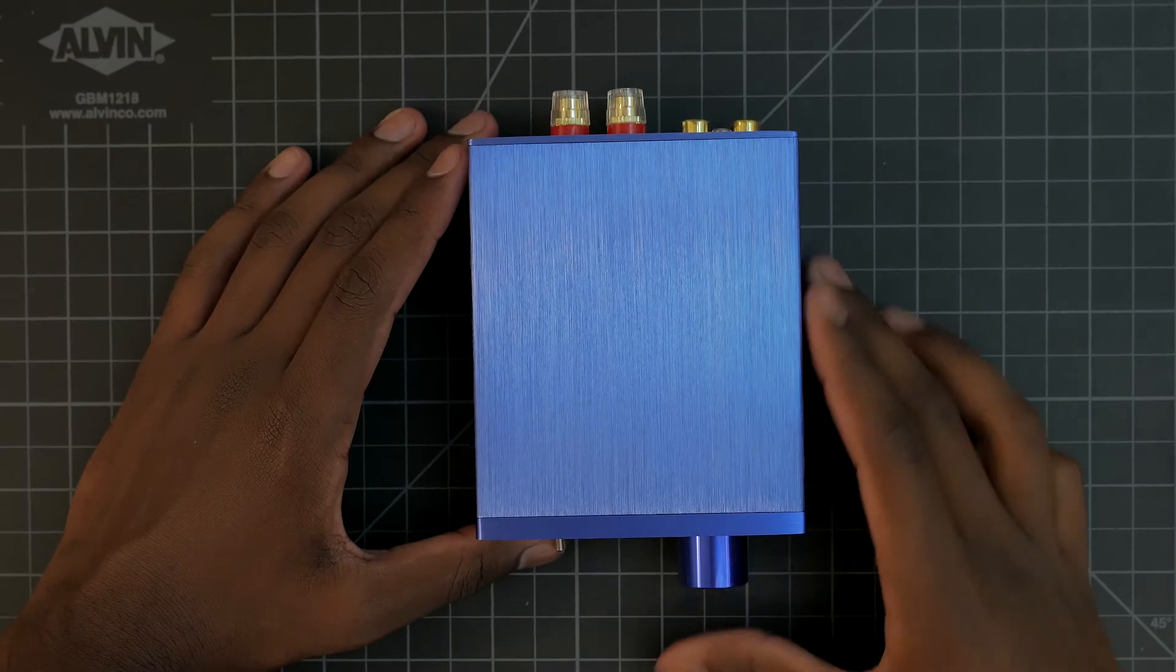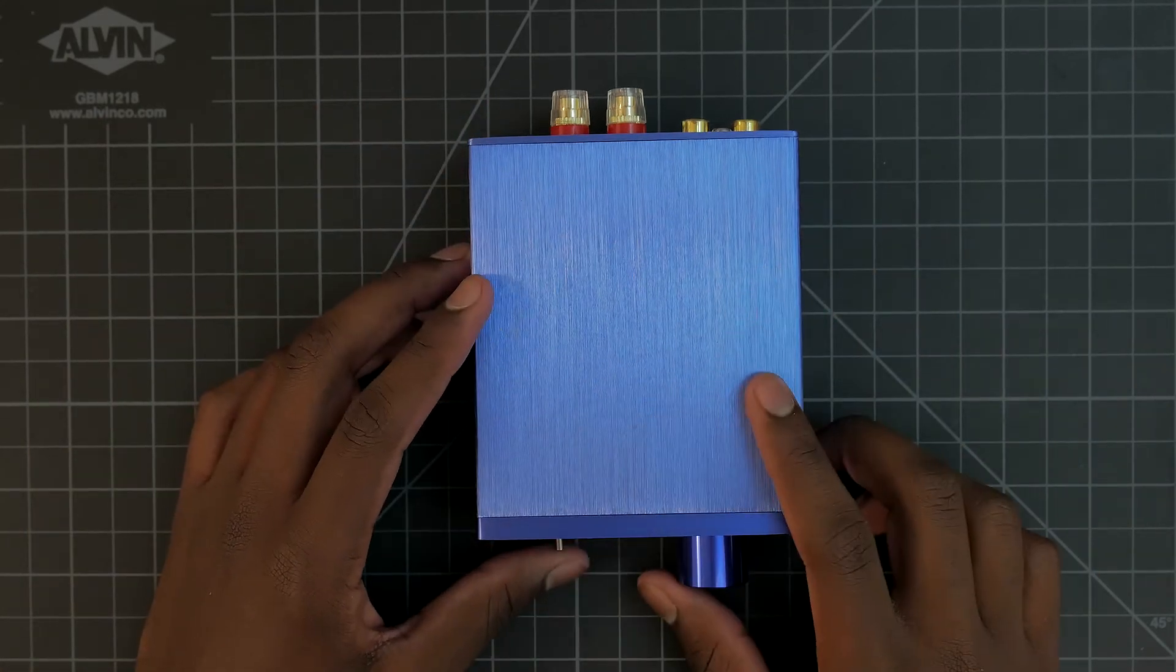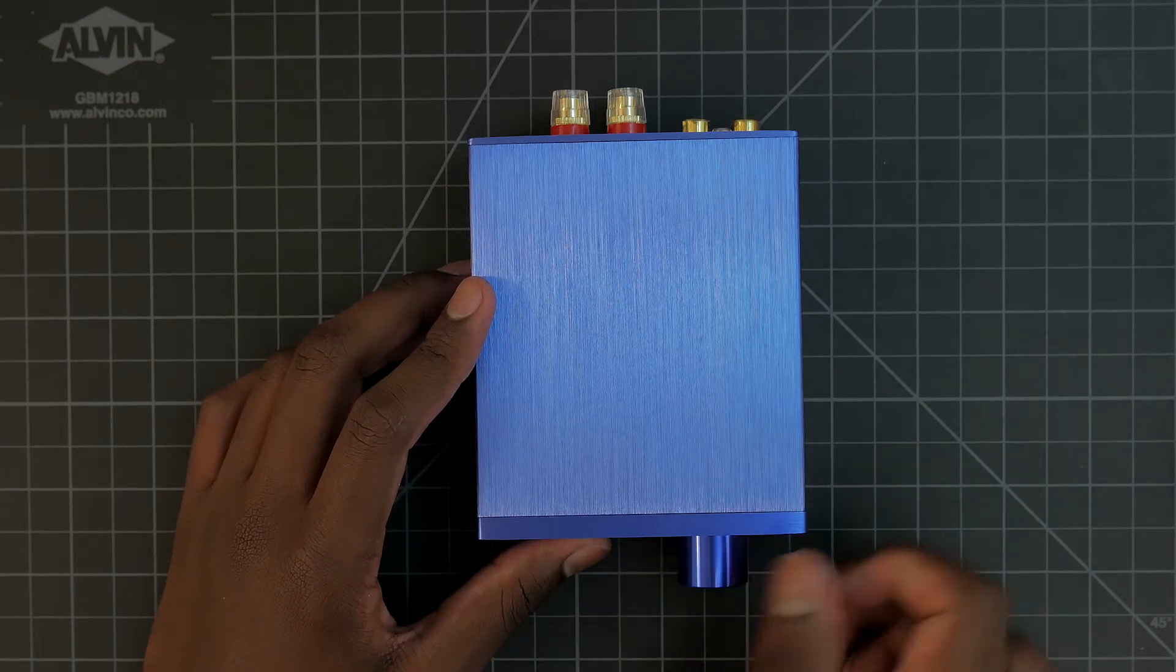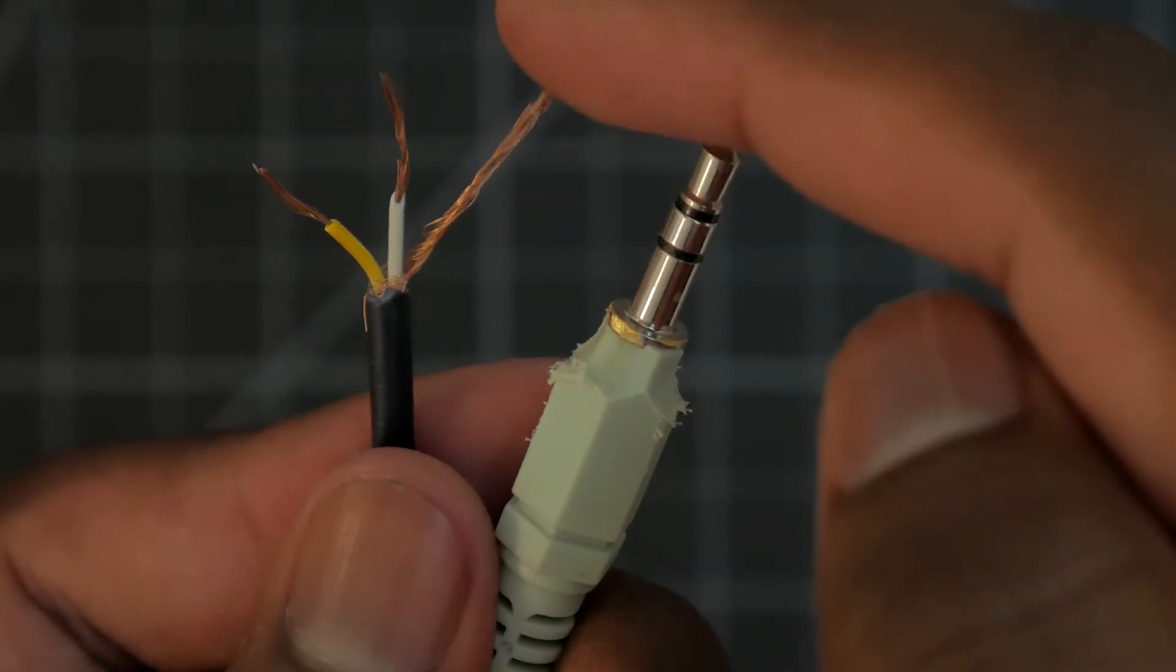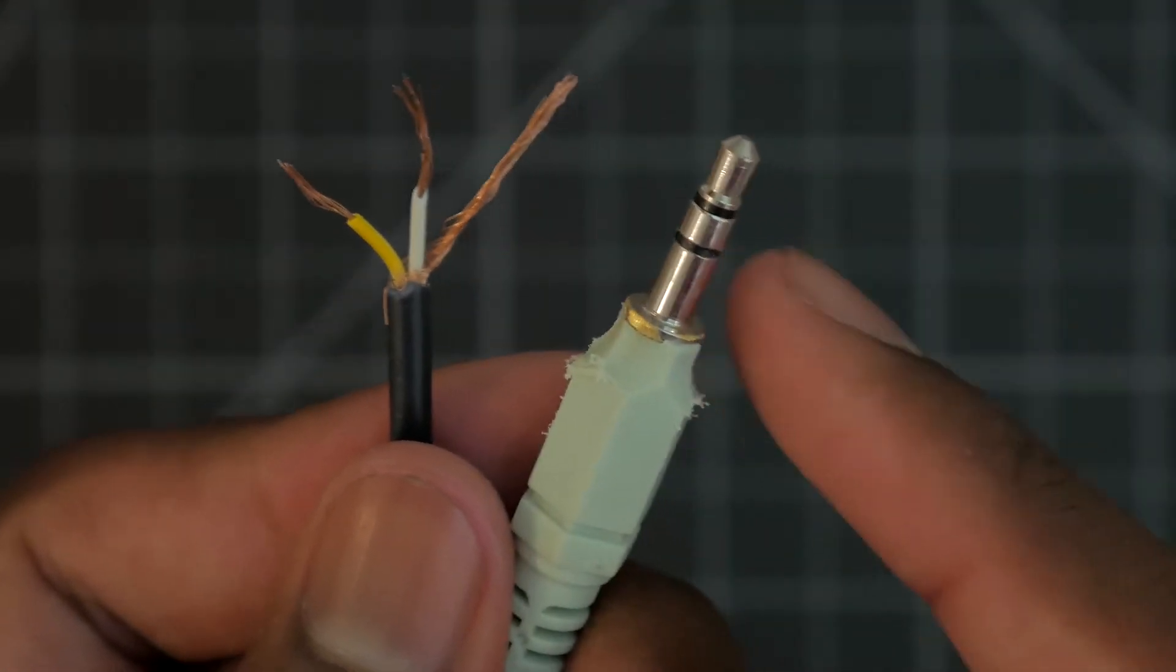So I'm going to test the speaker out. First, I need to create an aux to stereo RCA cable to plug into this amp, and in case anyone is interested in buying this amp, I'll show you how to do this. Just take an existing aux cable and strip the ends, and you should get three wires, a ground, and then a left and right audio channel.